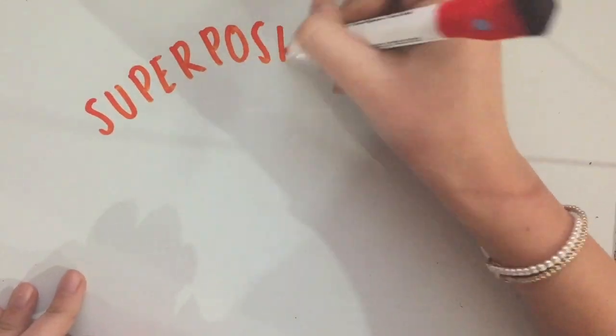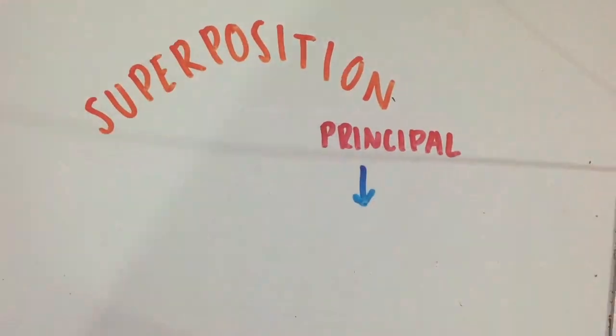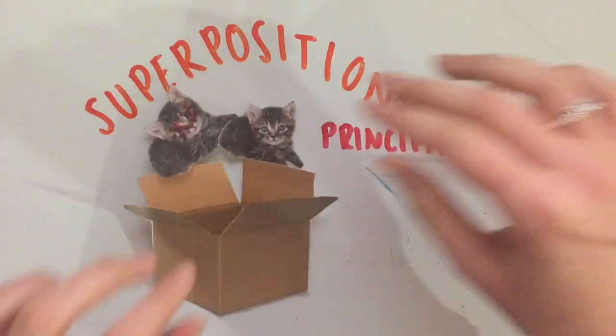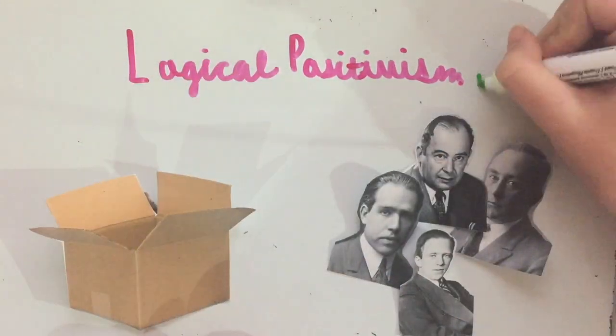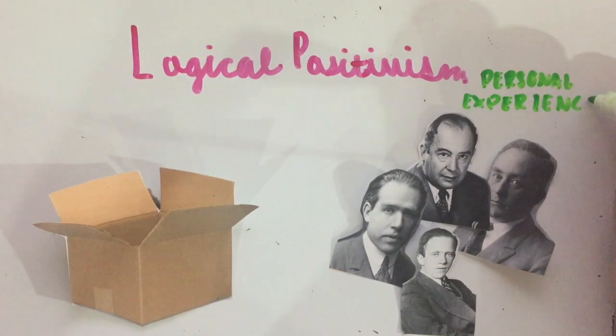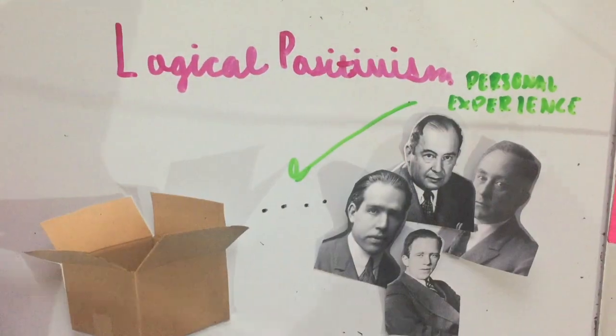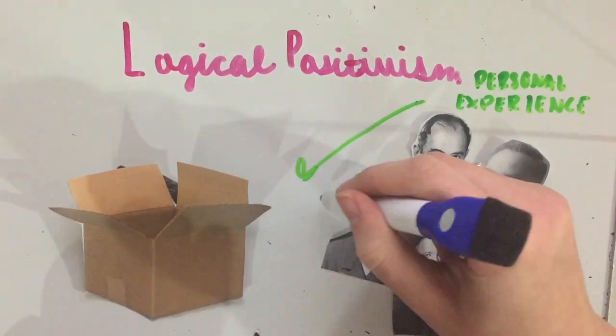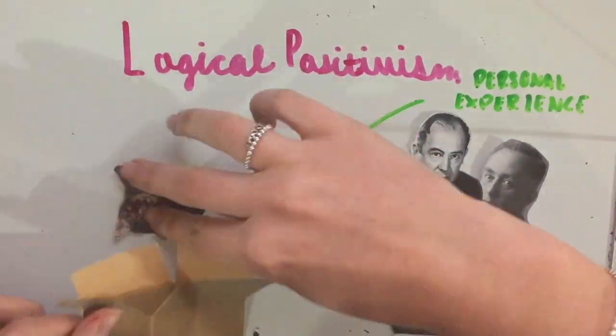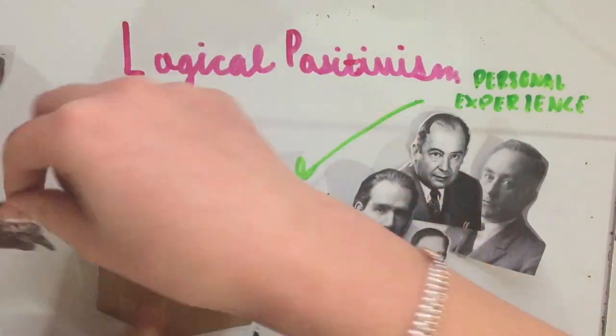In this case, the Superposition Principle is what tells us that the cat is both dead and alive at once, and Logical Positivism works in favor of the Vienna Circle, stating that when we open the box because of personal experience, then one could say the cat is dead, and it would be meaningful even if the cat was really alive, because you are now looking at the cat, and just the fact that you are observing it makes it meaningful.